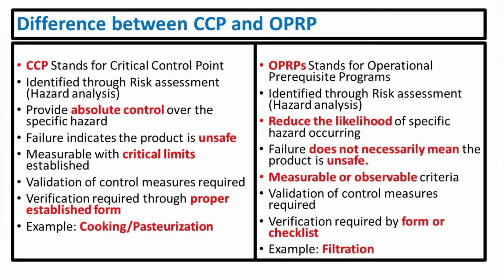CCP provides absolute control over specific hazards, while OPRP reduces the likelihood of specific hazards occurring. CCP failure indicates the product is unsafe, while failure of OPRP does not necessarily mean the product is unsafe.